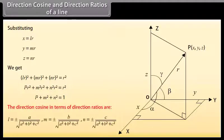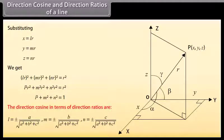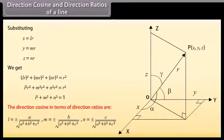The direction cosines in terms of direction ratios are: L equals plus or minus A upon square root of A squared plus B squared plus C squared, M equals plus or minus B upon square root of A squared plus B squared plus C squared, N equals plus or minus C upon square root of A squared plus B squared plus C squared.